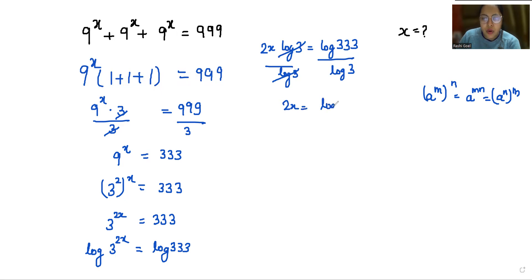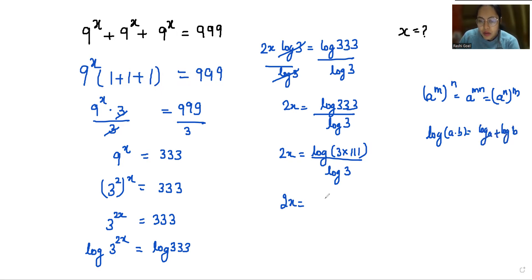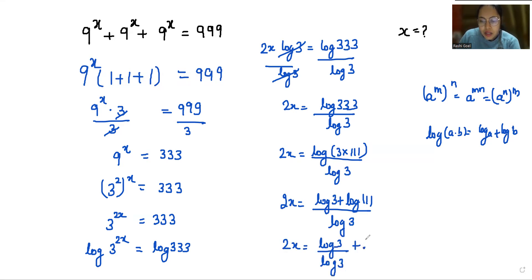So x = log(333) / log(3). Now I can write 333 as 3 times 111. According to the log rule, log(a × b) = log a + log b, so we get log 3 + log 111, all divided by log 3.